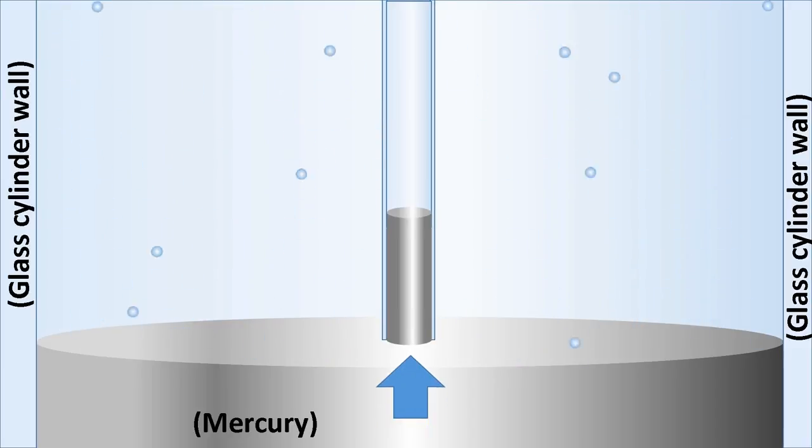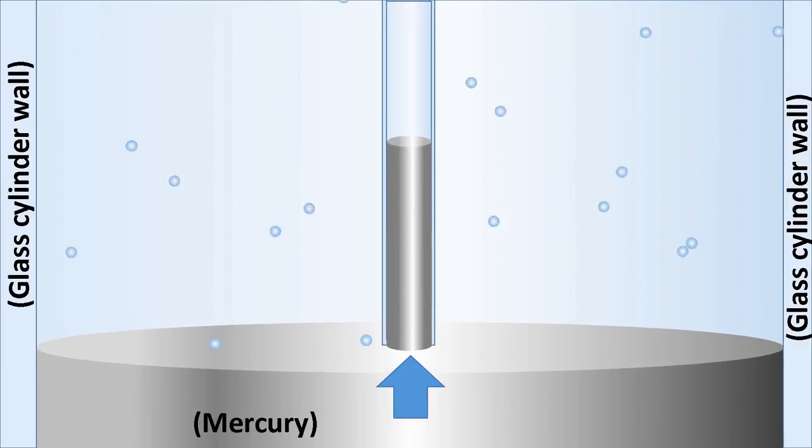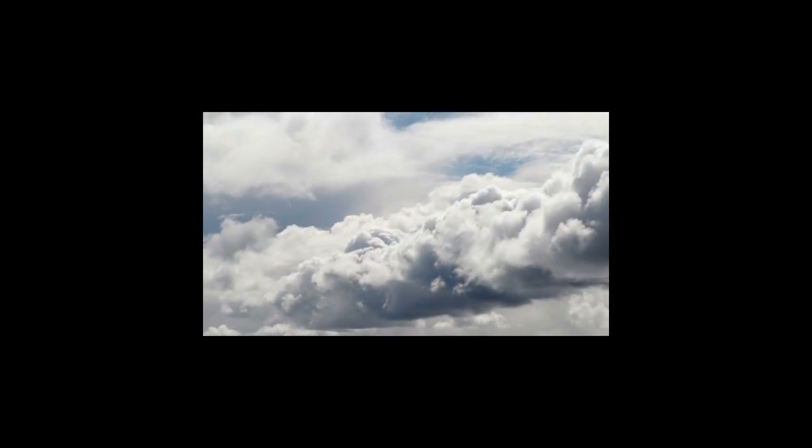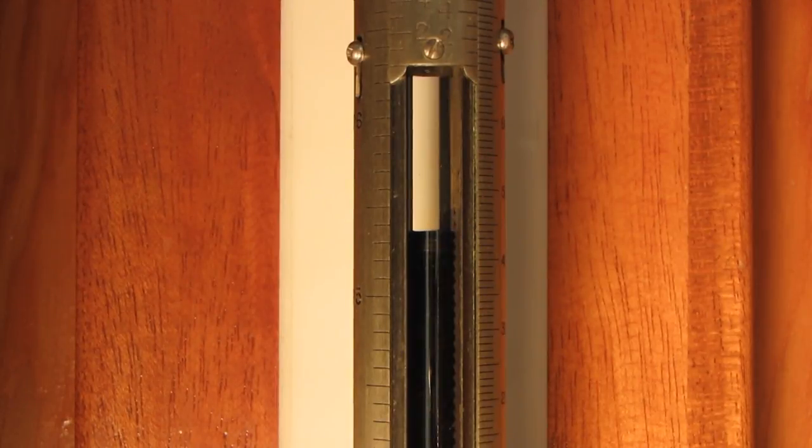If the atmospheric pressure increases, the surface of the pool of mercury experiences a greater force, and the height of the mercury in the tube increases. If atmospheric pressure decreases, as it does right before a storm, then the mercury level in the tube drops.